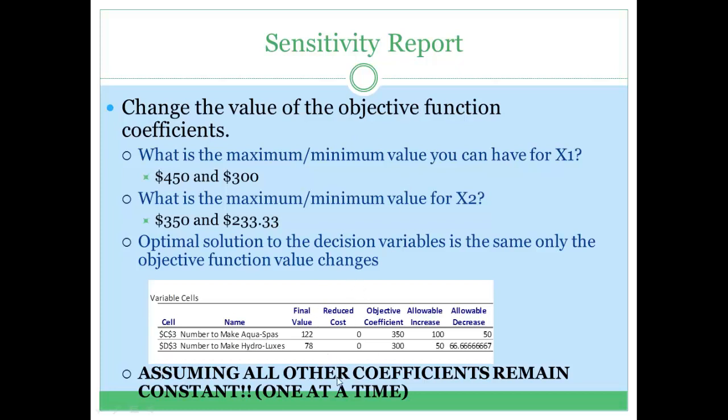Reduced cost I'm going to explain in a different video. The objective coefficient tells you the coefficients associated with each decision variable in the objective function.